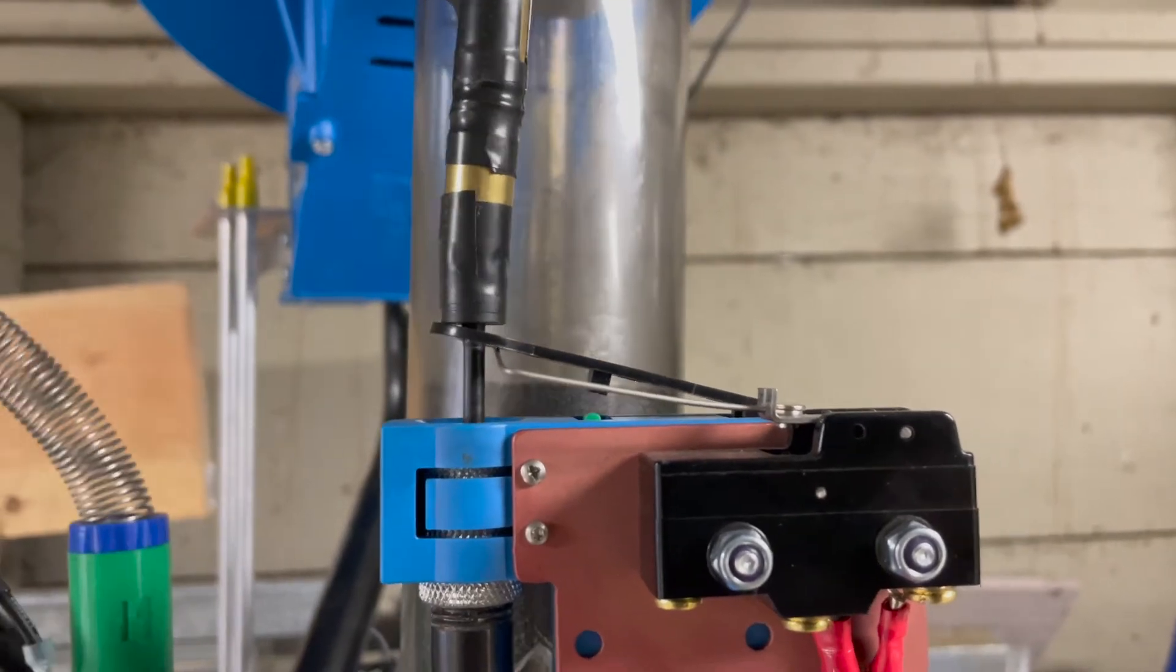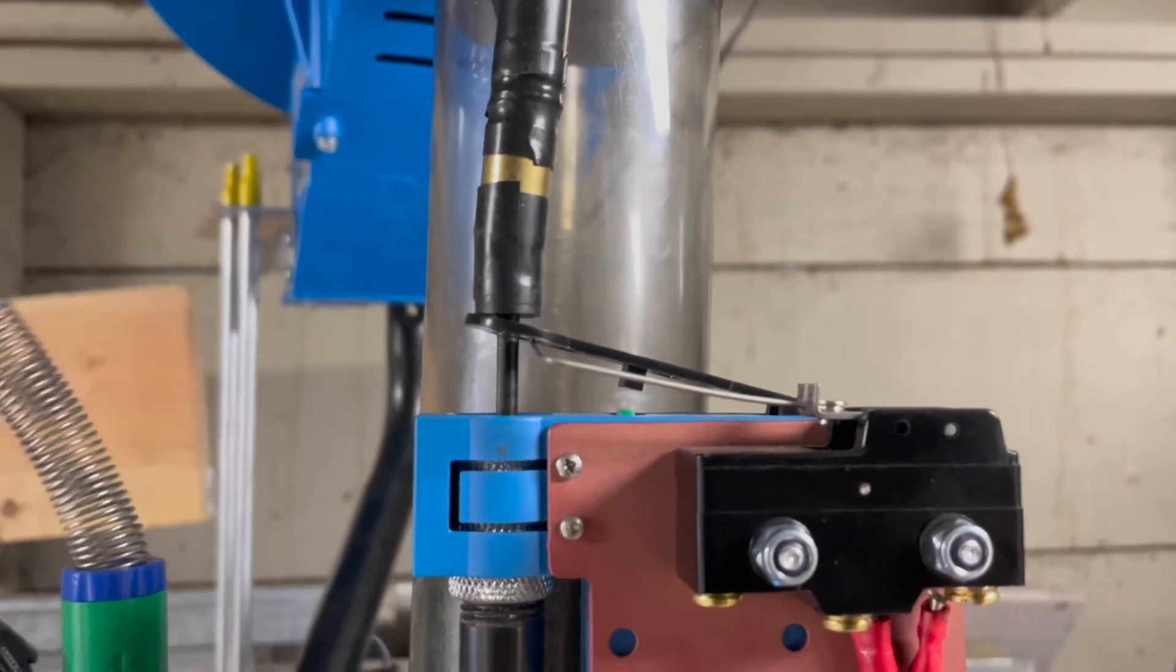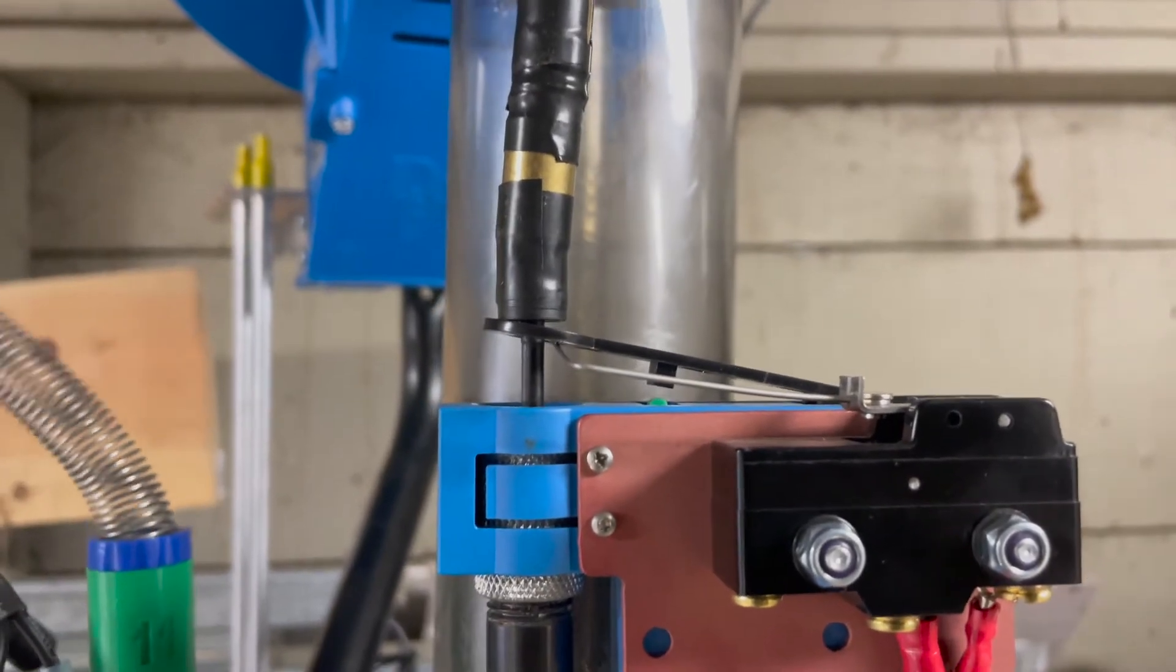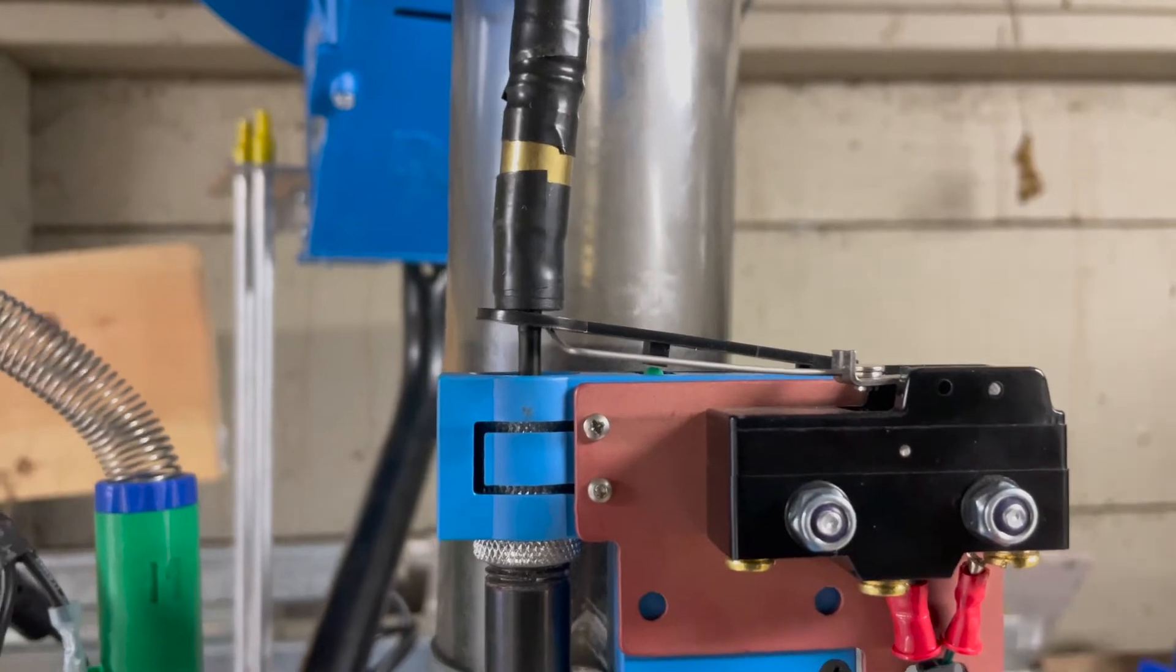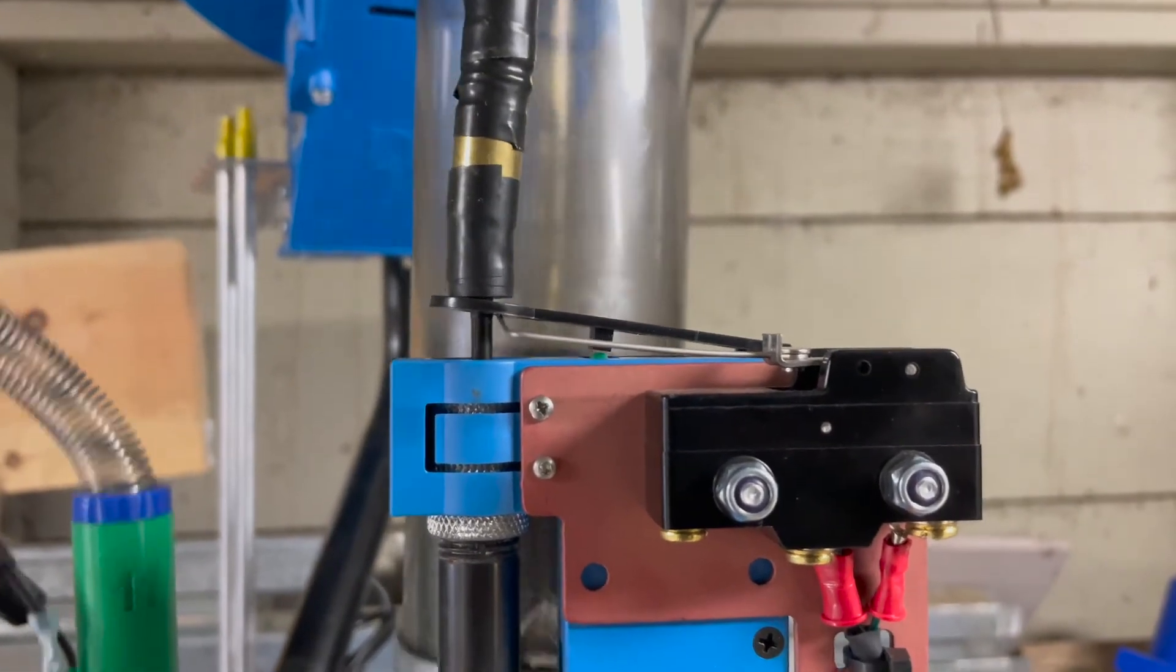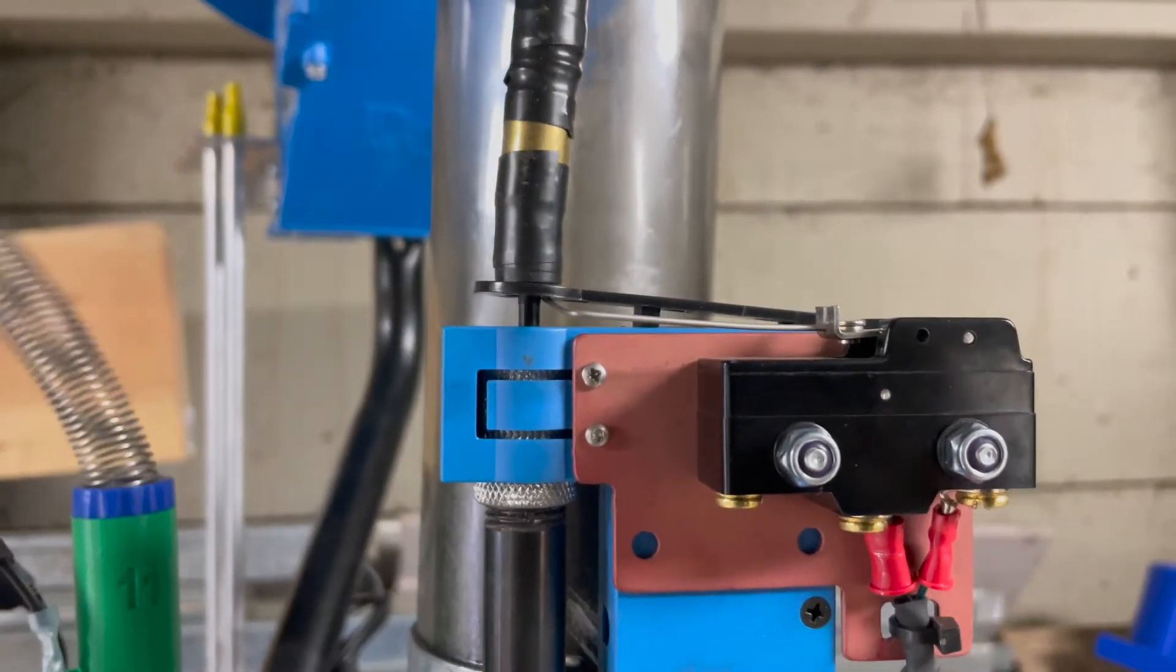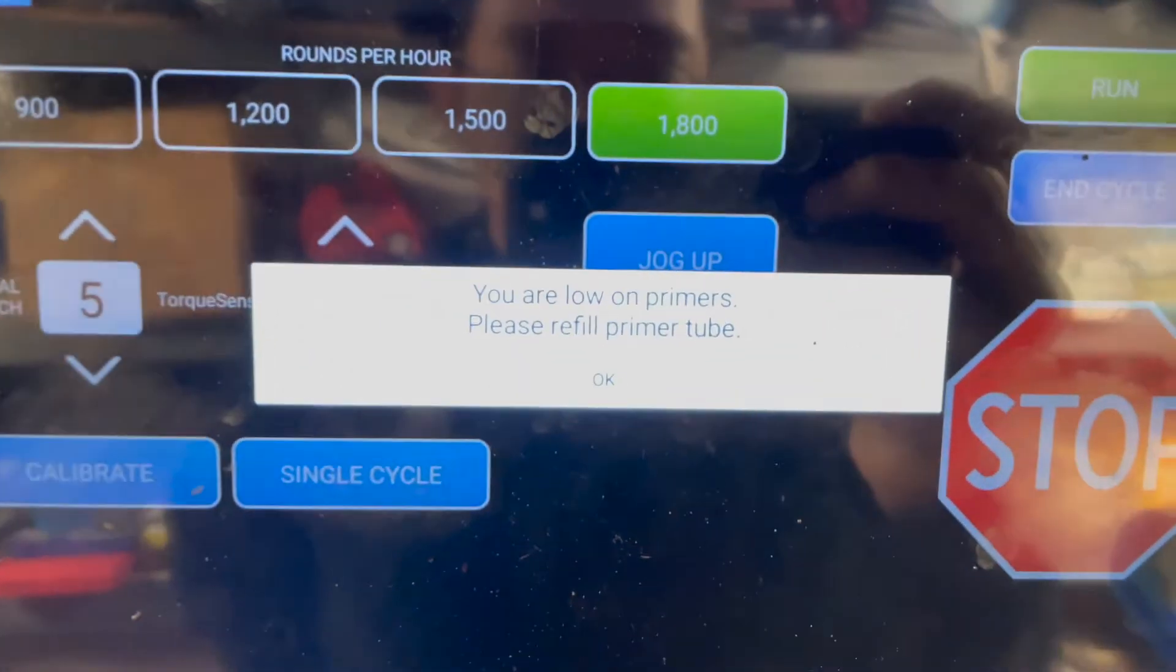Now we have the low primer sensor about to get tripped. See how it pushes down that metal wire? Push down more, maybe one more round. It will stop by itself and here we go. Press stops.